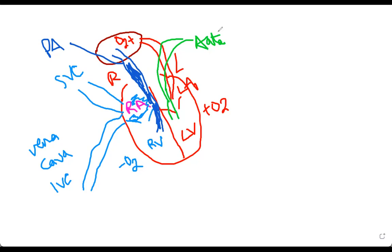From the aorta, blood can go to your head and lower extremities, and then it recollects back into the superior vena cava and inferior vena cava. This is all oxygenated blood through the aorta to the rest of your body. Blood flows in one direction: from the right side into the lung so oxygen can be added, then back to the left side of the heart, and pumped to the rest of the body. This is the normal blood flow.